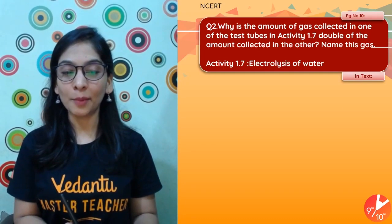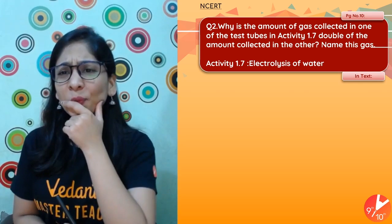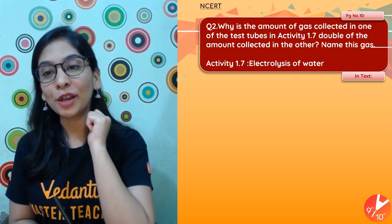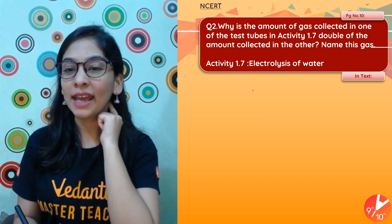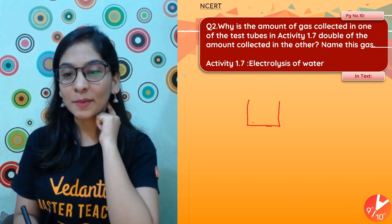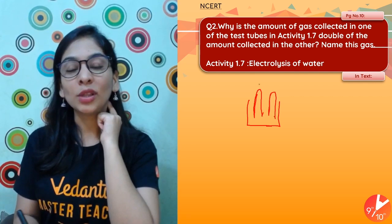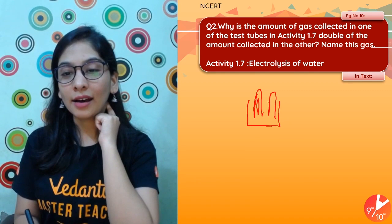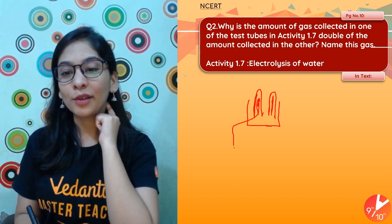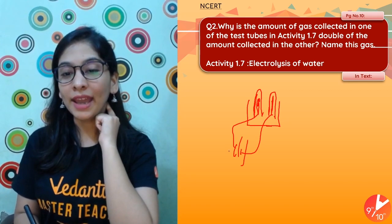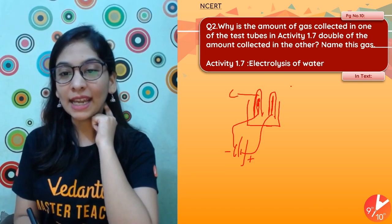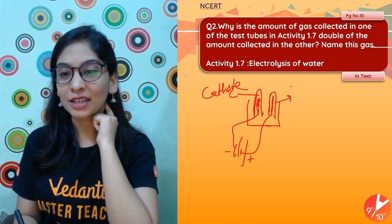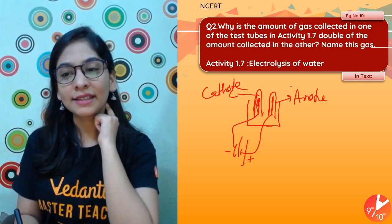Now let's move to Question 2. The question is: what is the amount of gas collected in one of the test tubes in Activity 1.7, and why is it double the amount collected in the other? Activity 1.7 is the electrolysis of water. In this activity you take two electrodes — a cathode and an anode, both platinum — connected to a battery. The negative terminal of the battery is the cathode, and the positive terminal is the anode. This has been discussed in detail earlier.